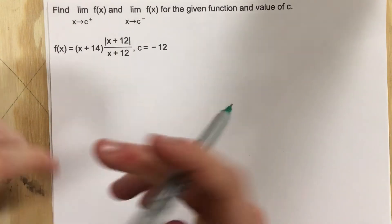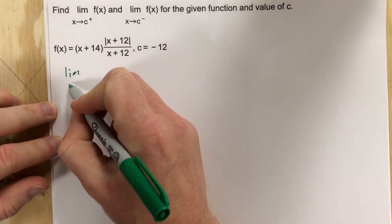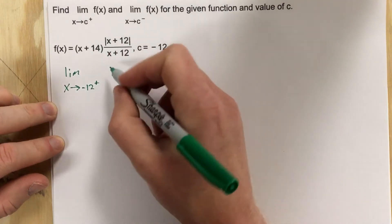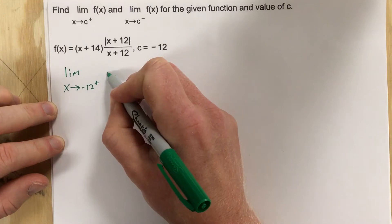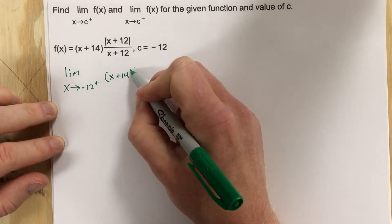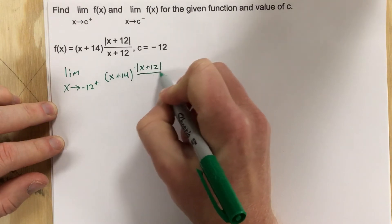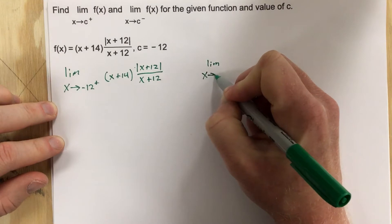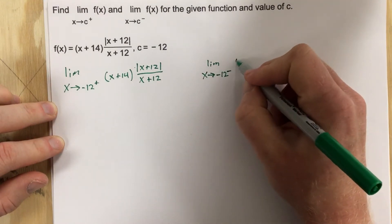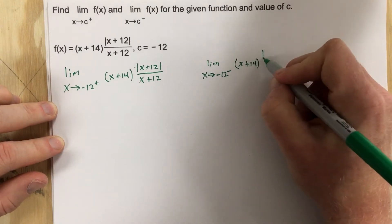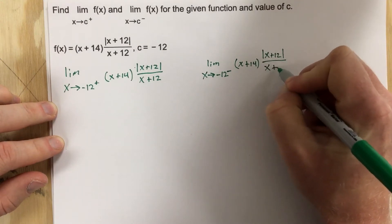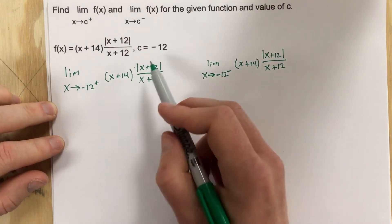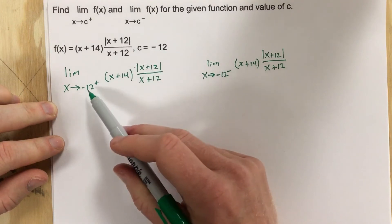They're asking us to find the limit as x approaches negative 12 from the right of the function x plus 14 times absolute value of x plus 12, all over x plus 12. We're also going to find the limit as x approaches negative 12 from the left of that same function. The key is to look at what happens to the absolute value as we plug in numbers to the left and right of negative 12.